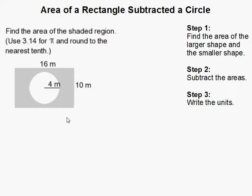How to find the area of a shaded region, which happens to be a rectangle, when we have a circle in it that we don't want.